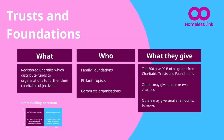The first type of organisation we will look at is trusts and foundations. This can be the most difficult to categorise, but with approximately 8,500 distributing grants in the UK, it is important to understand them. They are registered charities with a private, independent and sustainable source of income — that might be from investments, family wealth, or for corporate foundations, from their profit. Their main activity is to distribute funds to organisations to further their own charitable objectives.